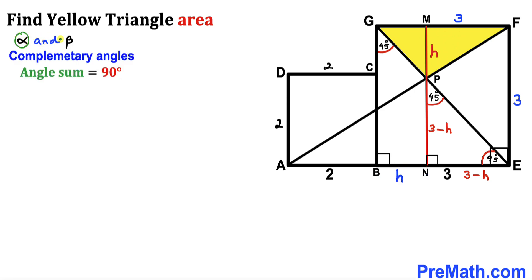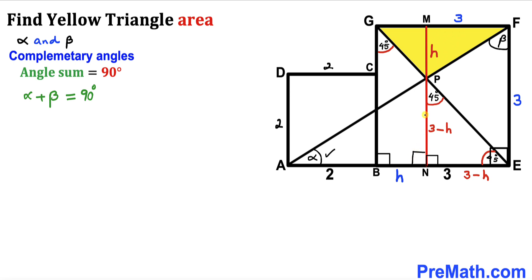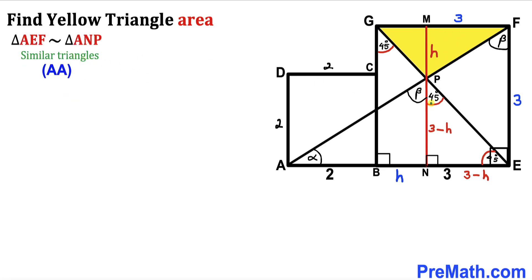Let's assume alpha and beta are two complementary angles, meaning alpha plus beta equals 90 degrees. In right triangle ABF, we label one acute angle alpha, making the other angle beta. In triangle ANP, the same angle alpha appears and the right angle is 90 degrees, so that angle must also be beta. Therefore, large right triangle AEF is similar to smaller right triangle ANP by the angle-angle similarity theorem.